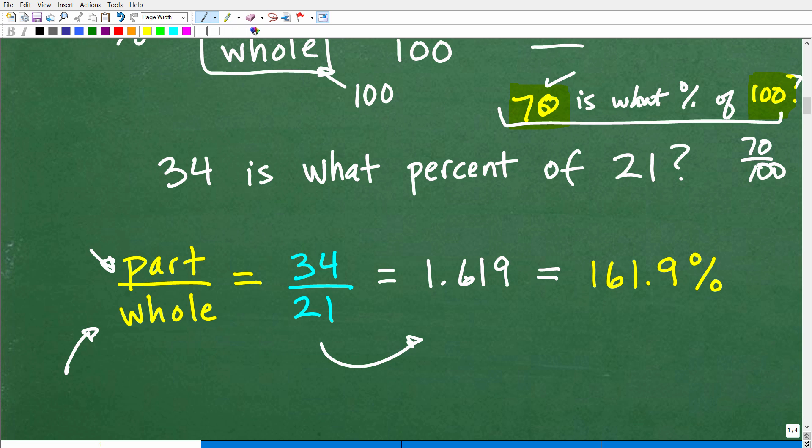Of course, there's other decimals here, but we'll just kind of leave it like this, 1.619. So now we have to learn how to write a decimal as a percent. So how do we do that? Well, you effectively multiply the decimal by 100 or move the decimal point over two places to the right.